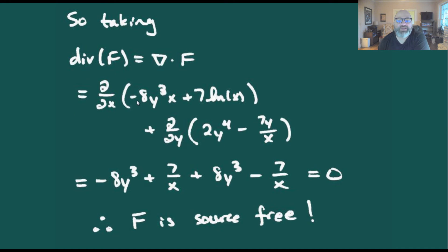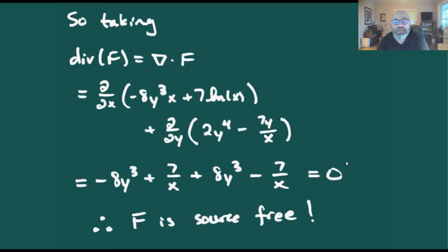The partial with respect to x of minus eight y cubed x plus seven natural log of x: the x cancels in the first term, and the derivative of the natural log gives us seven over x. Taking the partial with respect to y for the second component gives us eight y cubed minus seven over x. When we add these together, we get zero for the divergence.